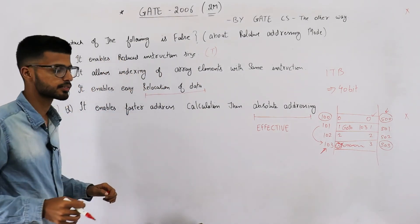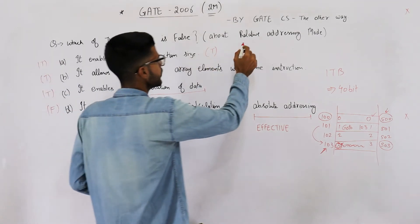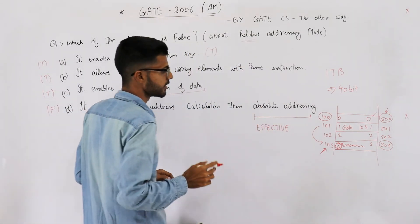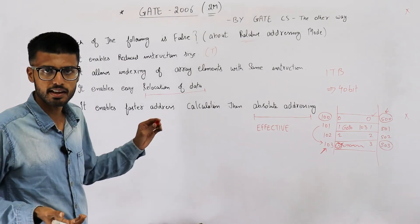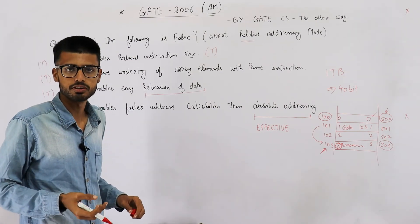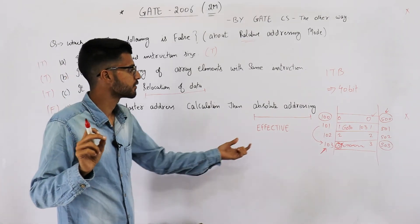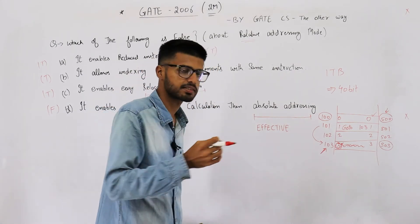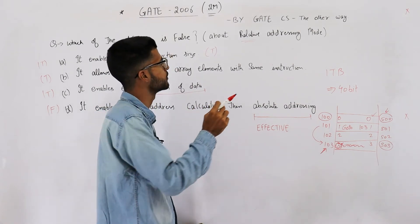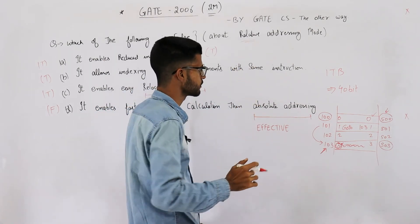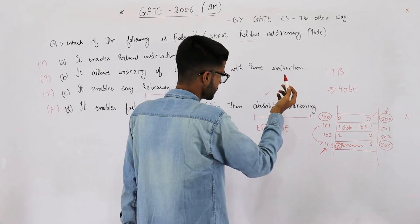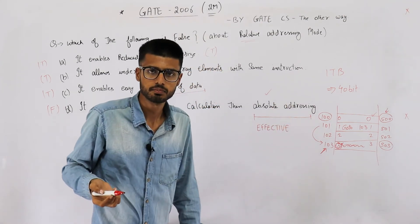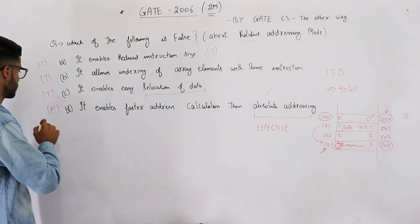You don't have to look for the address. But in relative, you need to calculate the address because addresses in relative are given relative to some position, so the actual address or effective address needs to be calculated. Even if you have some specific hardware to perform this calculation, still it won't be as fast as absolute because in absolute there's nothing to be done. So the answer is D part.